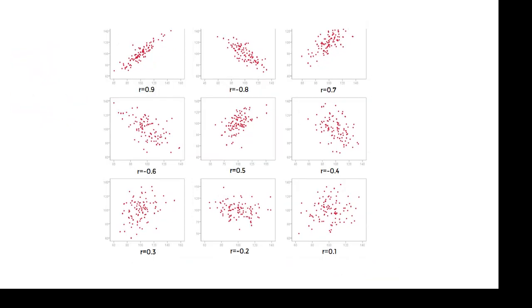And there you go. So the top left one is a strong positive correlation. The one to the right of it is a strong negative. The bottom right one, there is almost no correlation at all. So you should be able to estimate the correlation coefficient.